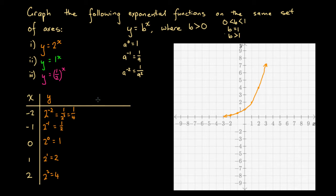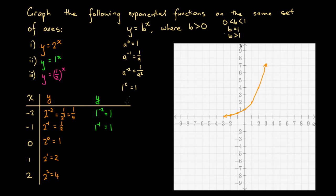Now let's look at y equals 1 to the power of x. A useful indice law here: 1 to the power of c always equals 1, no matter what value we substitute for c. So at x equals minus 2, we get 1 to the power of minus 2, which equals 1. At x equals minus 1, we get 1 to the power of minus 1, also equal to 1. At x equals 0, 1 to the 0 is 1. At x equals 1, it's 1. At x equals 2, it's also 1. No matter what x we substitute, the y value is always 1.